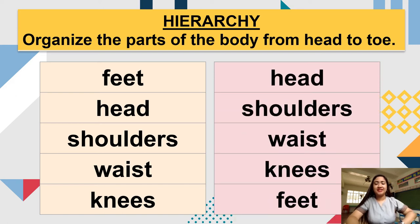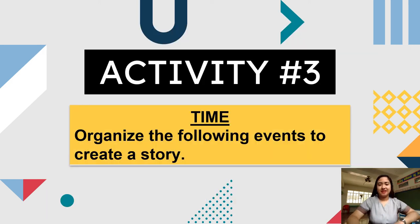Here are the correct answers. The head should come first, then the shoulders, then the waist, the knees, and lastly the feet. Did you get the correct answer? Type in your score in the comment section.